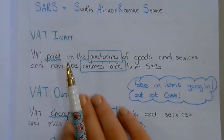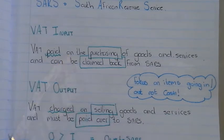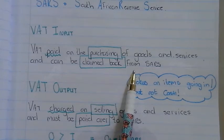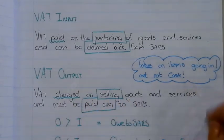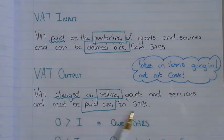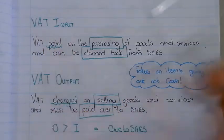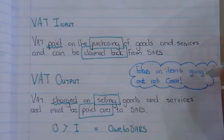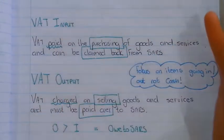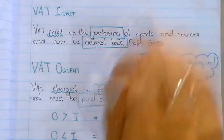Input VAT is the VAT you pay when you purchase goods or services. If you are a VAT vendor, you can claim this back from SARS. Output VAT is the VAT you charge somebody when selling goods and services — this money does not belong to the business and must be paid over to SARS. A helpful way to remember: input VAT is when goods are coming into the business, and output VAT is when goods and services are moving out of the business.